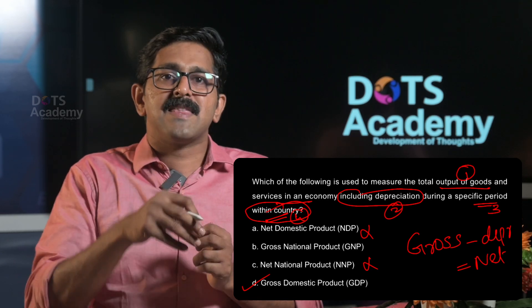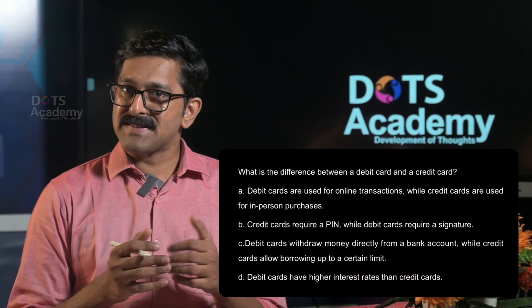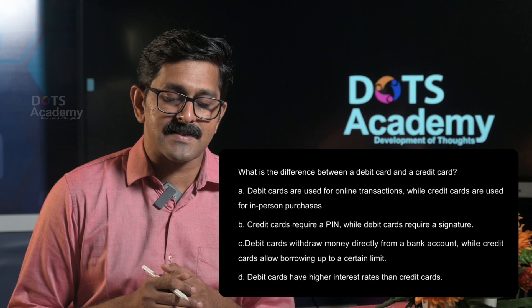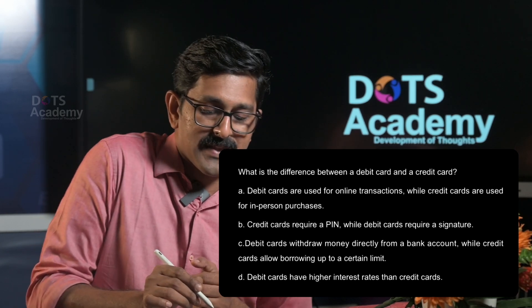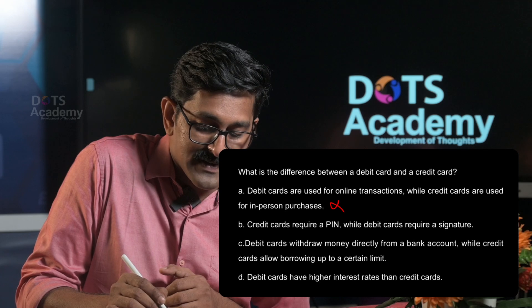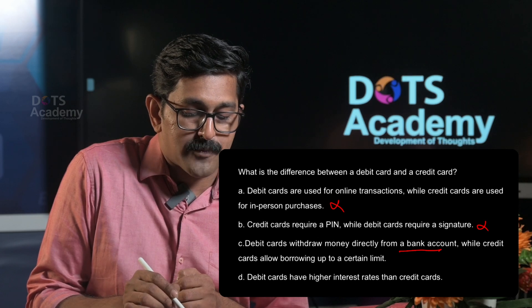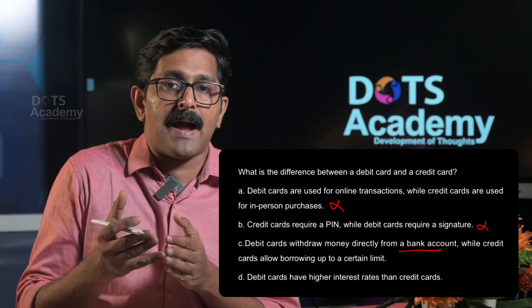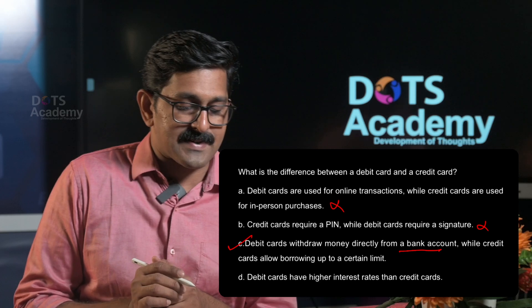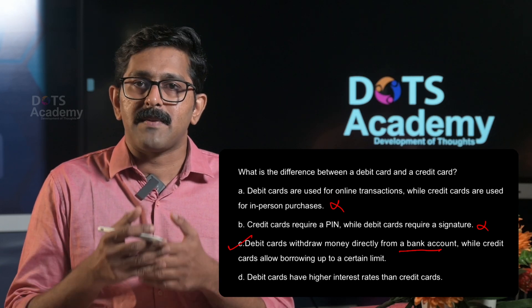What is the difference between a debit card and a credit card? It's a very simple question from previous years. Option A: Debit cards are used for online transactions while credit cards are used for in-person purchases. Option B: Credit cards require a PIN while debit cards require a signature. Option C: Debit cards withdraw money directly from a bank account while credit cards allow borrowing up to a certain limit. Option C is correct.